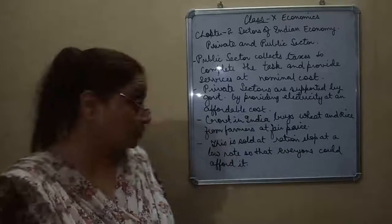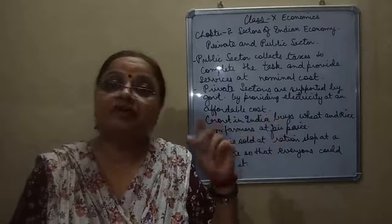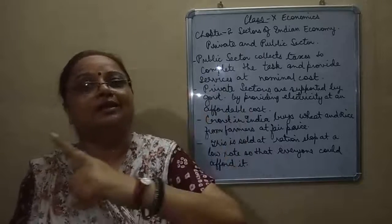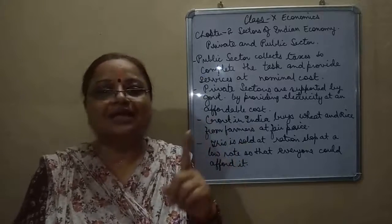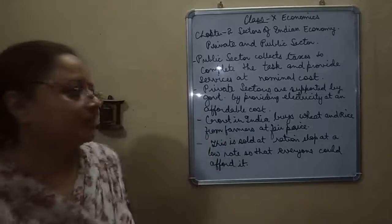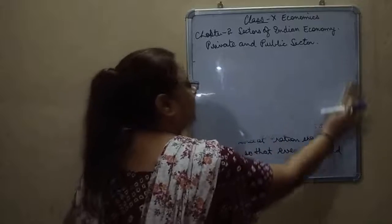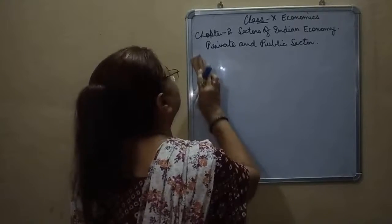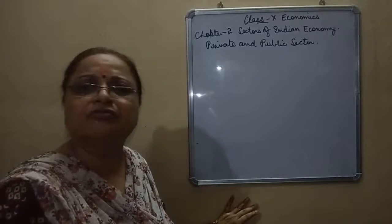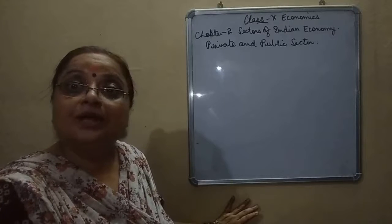For example, if the cost of wheat is 25 rupees, the government provides it for 20 rupees, so 5 rupees is absorbed by the government. There are many activities where the primary responsibility of the government is to spend. Wherever the government can support people, it has to provide that support.